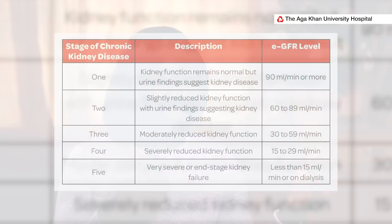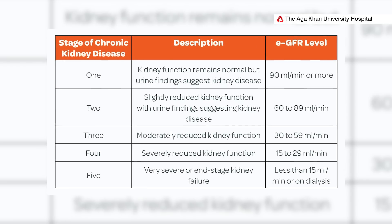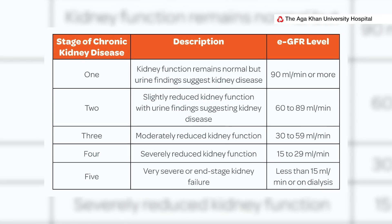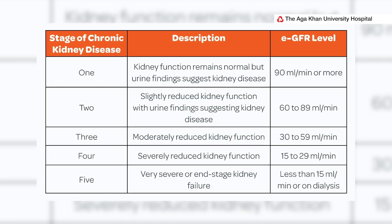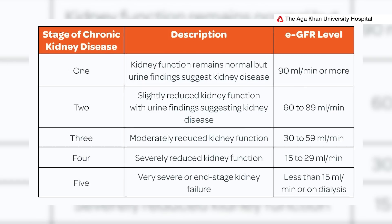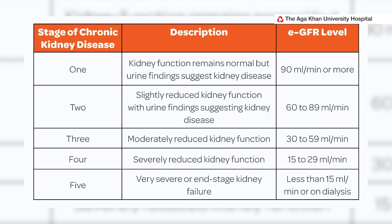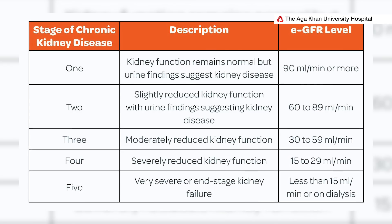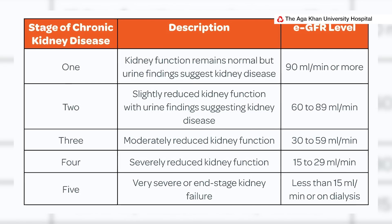At stage three, you might find that a patient has anemia — a reduction in blood level — or problems with calcium and phosphate, which are important for bone health. We manage accordingly, and if the patient progresses through the stages and reaches stage five, which is end-stage kidney disease, we think of ways of replacing the kidney function.